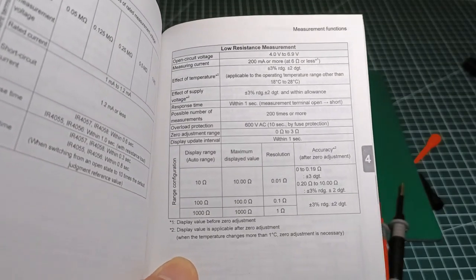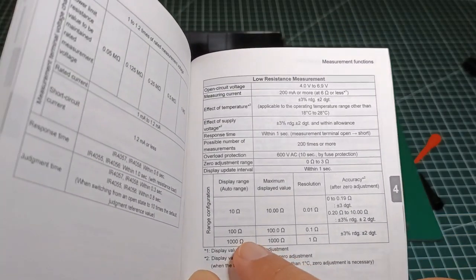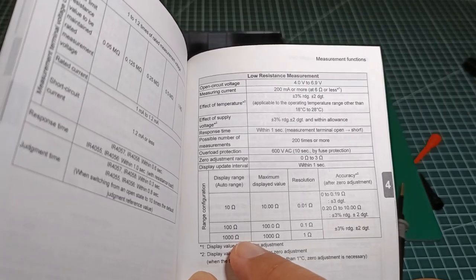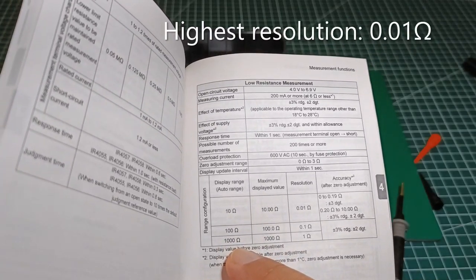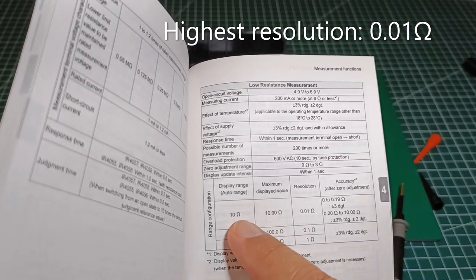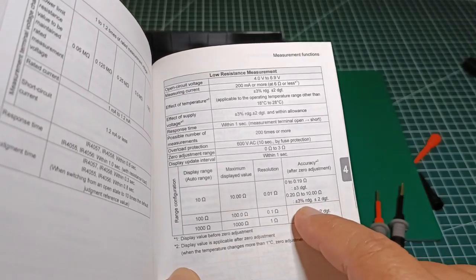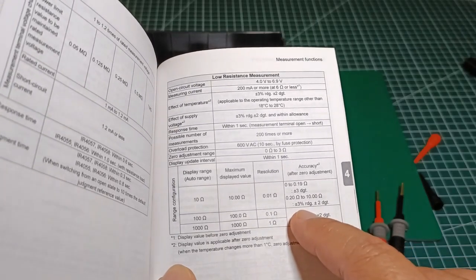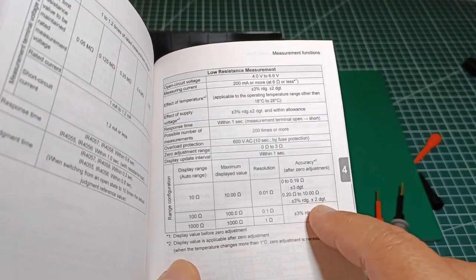Here at its user's manual, we can see that at the low resistance measurement, the instrument has three automatic ranges: 10 ohms, 100 ohms, and 1000 ohms. The highest resolution can be found in the 10 ohm range, which is 0.01 ohm, with an accuracy of plus or minus 3 percent of the reading and plus or minus 2 digits.